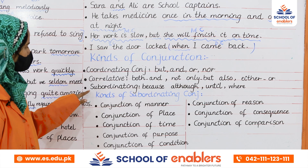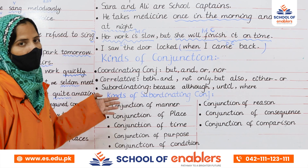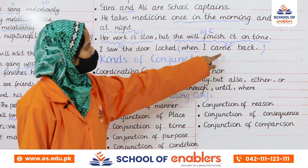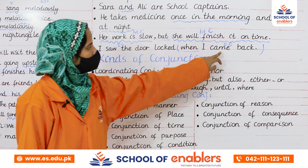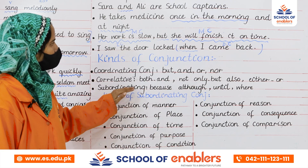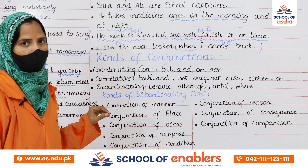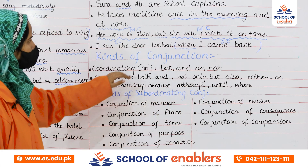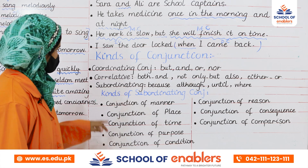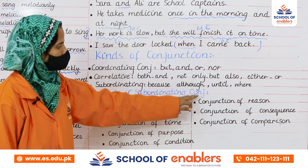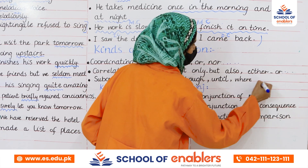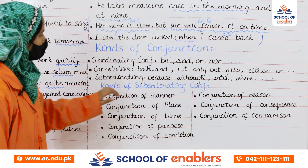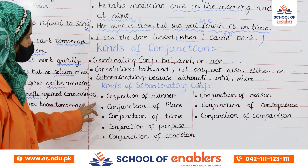The third type is subordinating conjunction. As the name suggests, in this type we connect one independent clause and one dependent clause. We use words like because, although, until, where to join them. This list is not final — you have to explore and find out more words. We further have kinds of subordinating conjunctions.